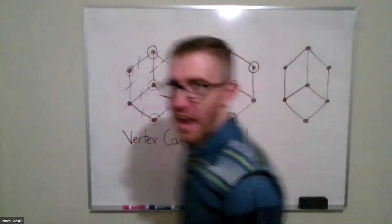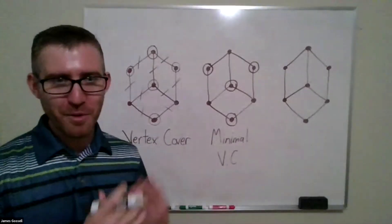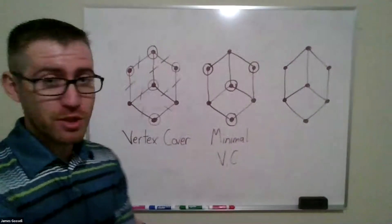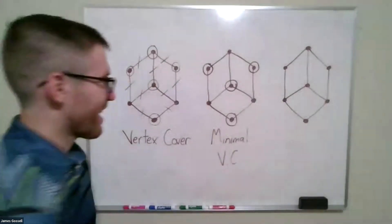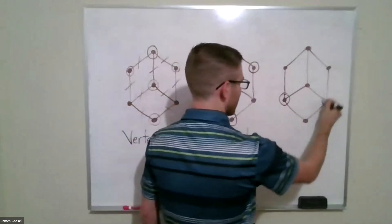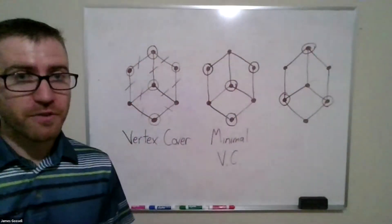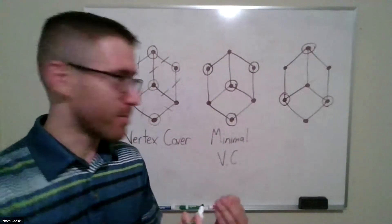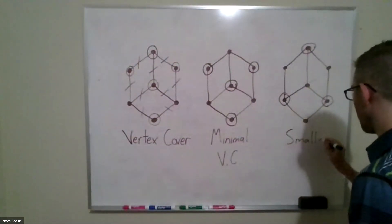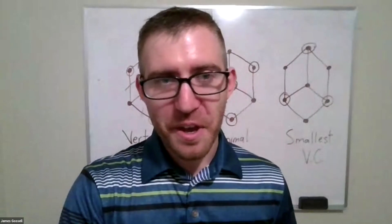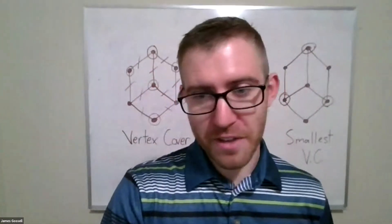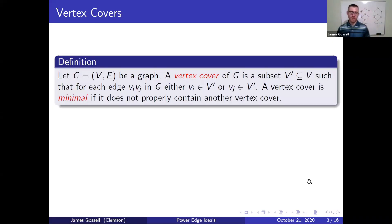If I was trying to do this in an optimal way — choosing a vertex cover with the fewest number of vertices — this vertex up here really isn't necessary. I could have just chosen these three vertices, and that would also be a vertex cover. Every one of these vertices would be necessary; if I removed any one of them, it would no longer be a vertex cover. We call this a minimal vertex cover.